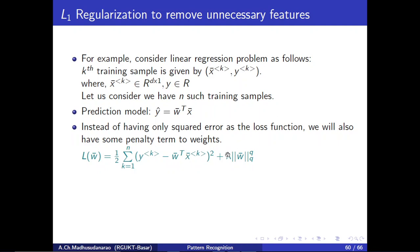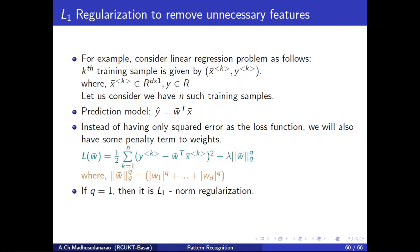Consider a linear regression problem where the k-th training sample has input feature vector x-bar-k and output y-k. We have n such training samples, and our prediction model is linear: y-hat equals to w-transpose x, meaning y-hat equals to w1x1 plus w2x2 plus and so on wd-xd. Instead of having only squared error as the loss function, we also add some penalty term to the weights. Lambda is some positive constant controlling this penalty - lambda equal to 0 means no penalty at all. This corresponds to L-q norm regularization: if q equals 1 it is L1 norm, if q equals 2 it is L2 norm.